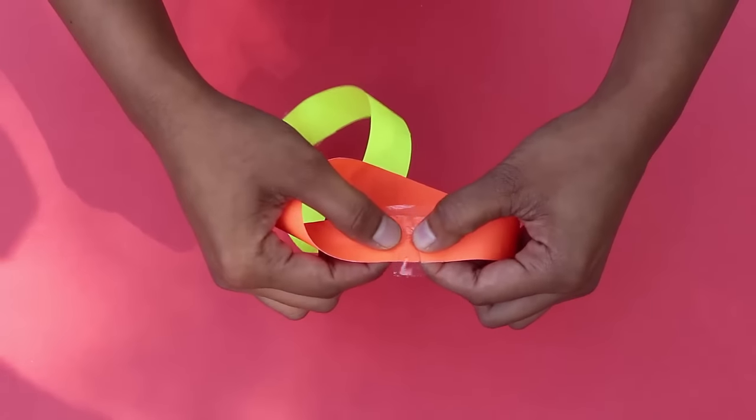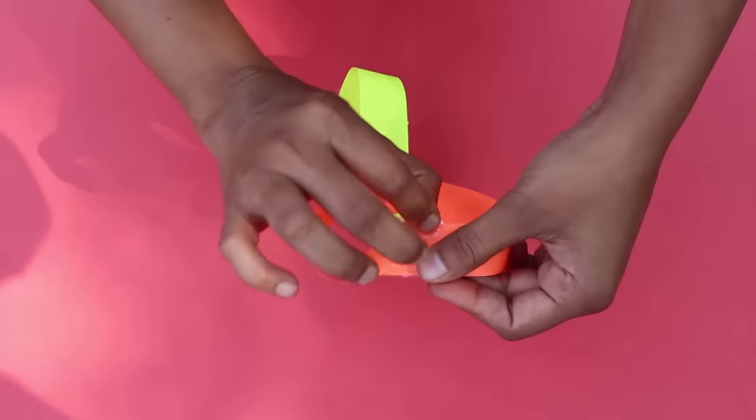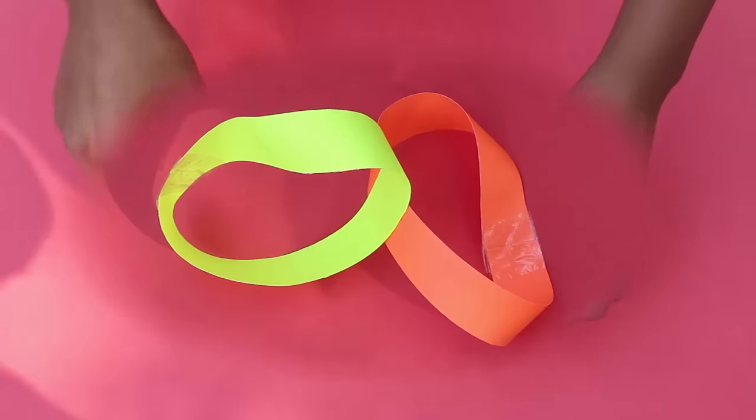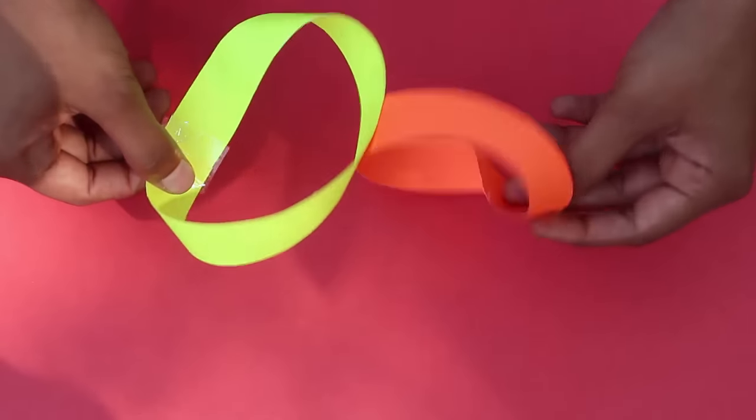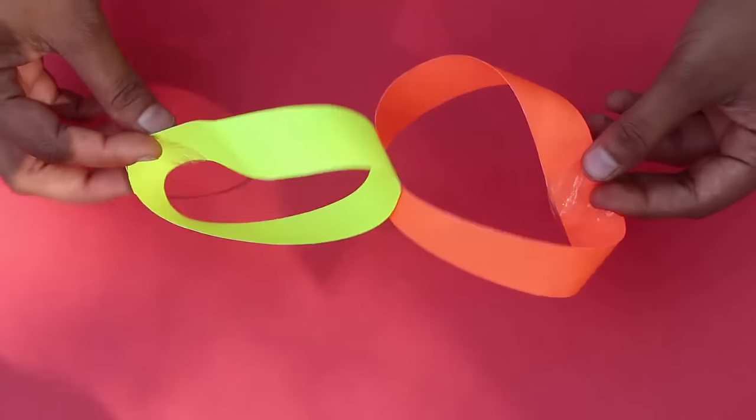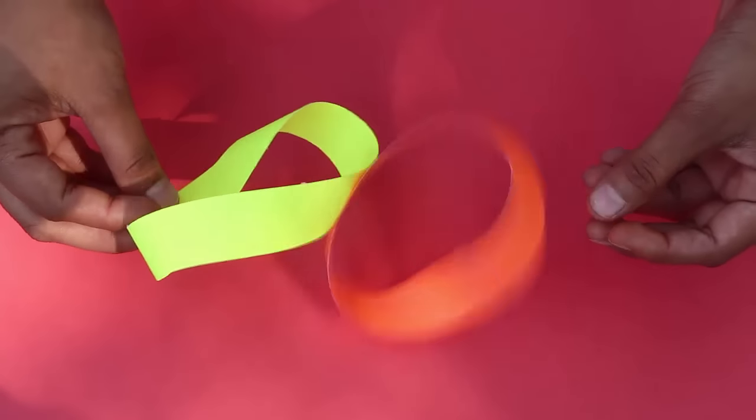Now we will have two mobius strips twisted in opposite directions and glued together. One strip would be twisted clockwise while the other strip would be twisted in the anti-clockwise direction.